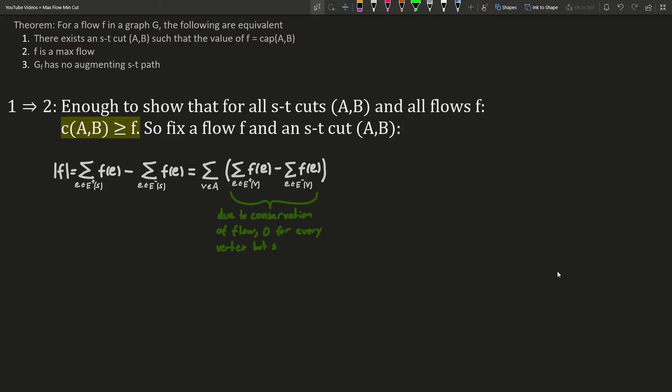Due to the conservation of flow, this term is zero for all vertices except for the source. This really only added a bunch of zeros, but remember that we want to relate the value of the flow to the value of the cut, and now we are already talking in terms of one partition of the cut.